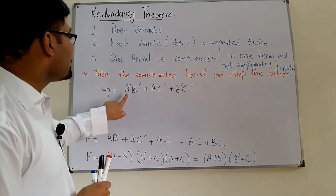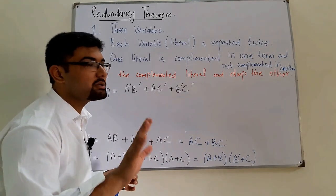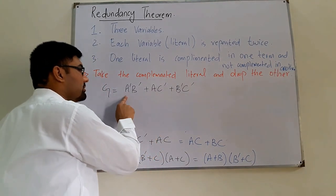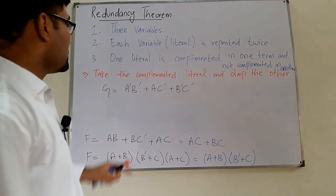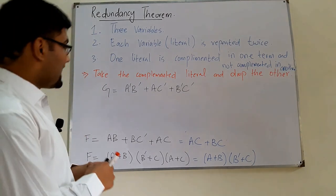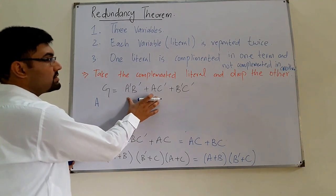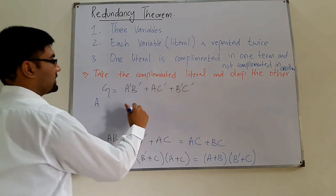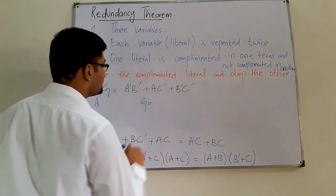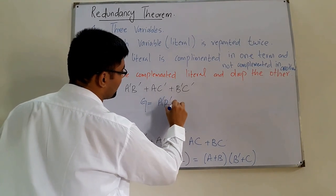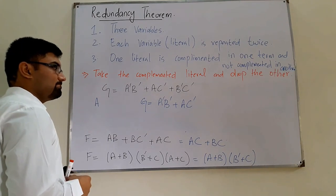Looking at the expression: B is complemented in the first term and complemented again in the third — so B is not our target. A is complemented in the first term and not complemented in the second term — so A is the literal we want. We take the two terms containing A and drop the other. Therefore G = A'B' + AC'.